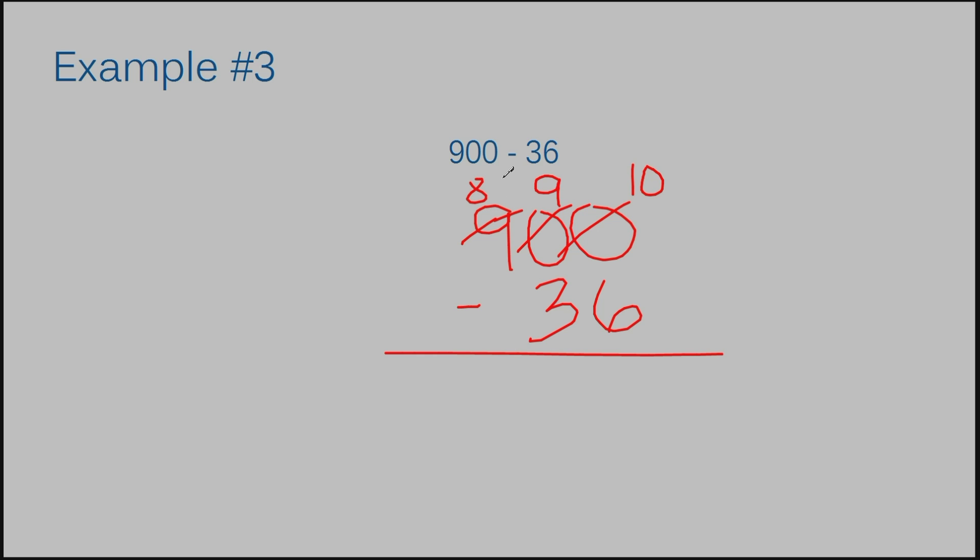But to simplify things for you, just know the very first zero is always a 10. Any zeros to the left of that are going to be 9. And you have to continue to the very first place digit that has an actual value. In this case, it's a 9. And you make it one less. And you make it an 8.